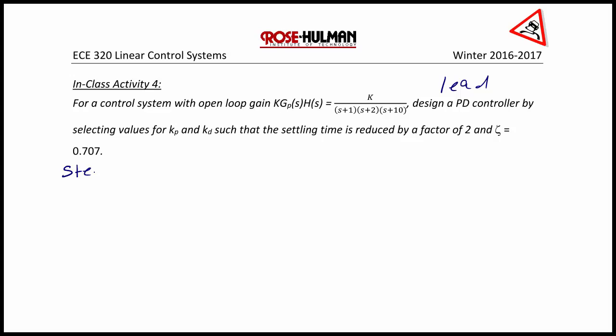We've actually already done step 1 in the prior activity. For step 1, we got that in order for zeta to equal 0.707, which means an angle with the real axis of 45 degrees, K was equal to 18.8, and the characteristic equation is Δ(S) = S³ + 13S² + 32S + 20 + 18.8. This characteristic equation has poles at -1.376 ± j1.376, as well as a pole at -10.25.